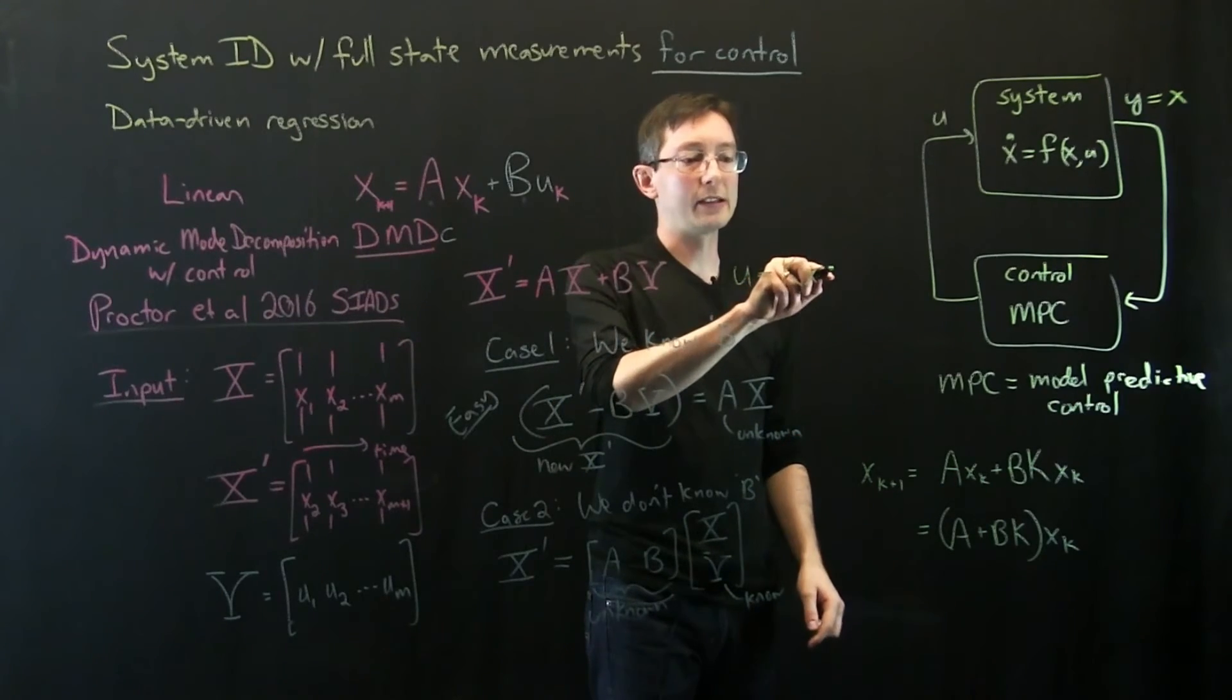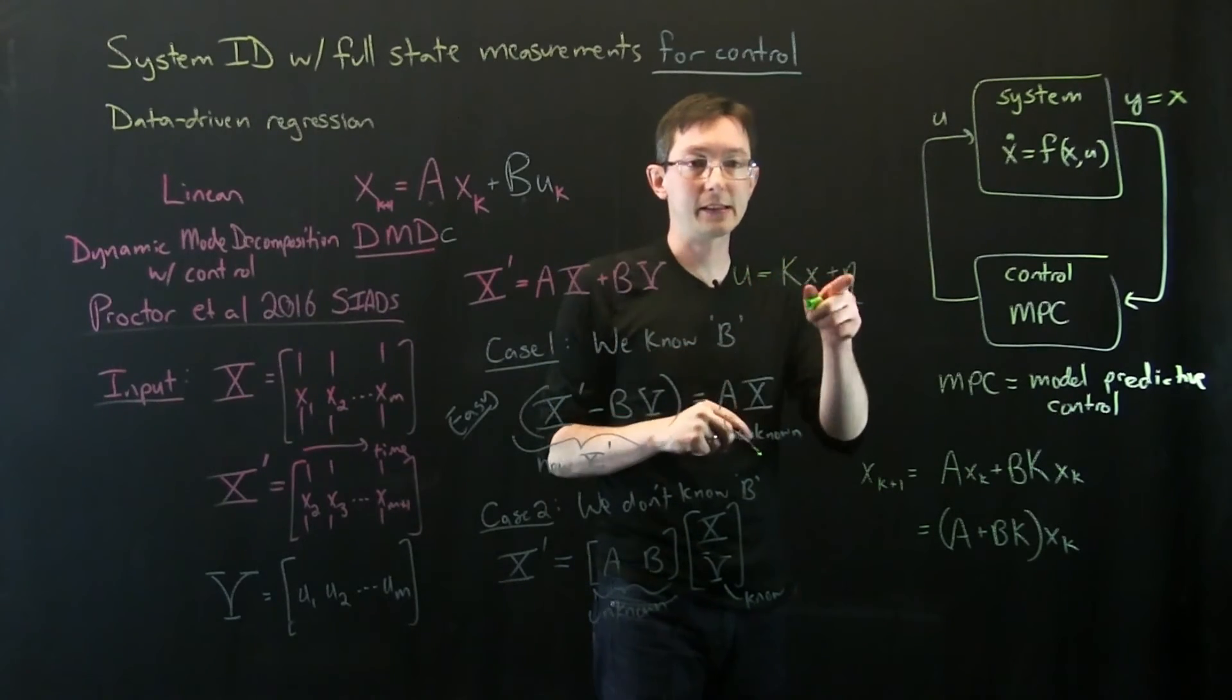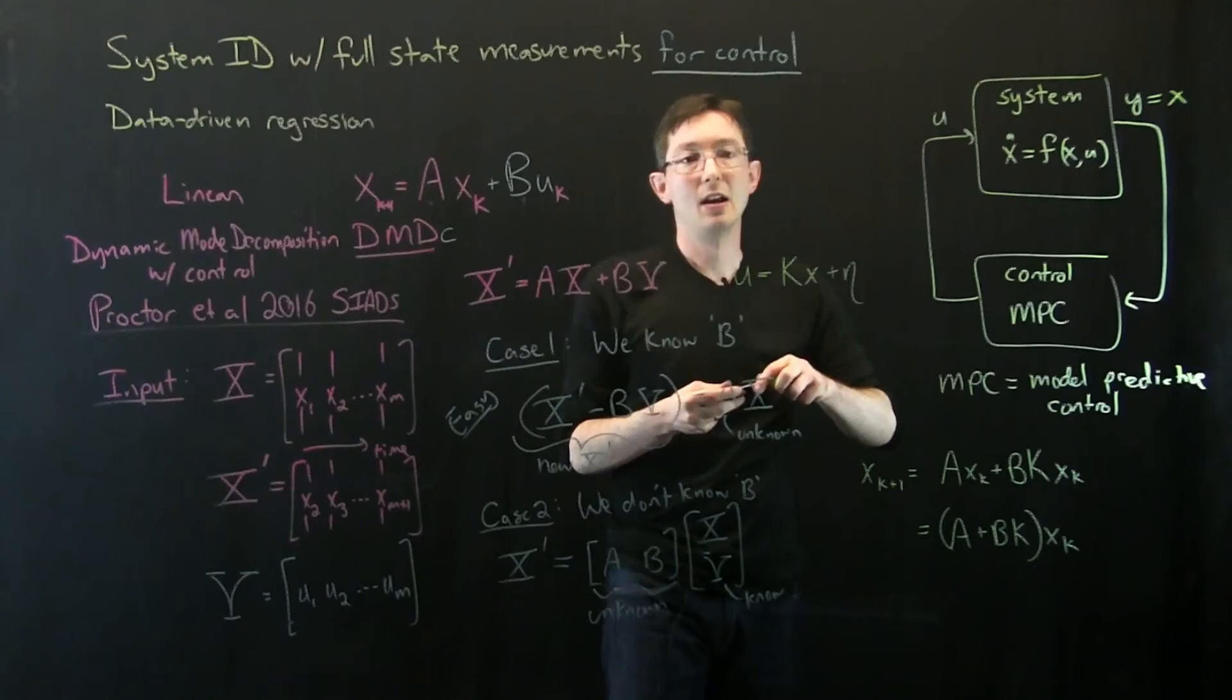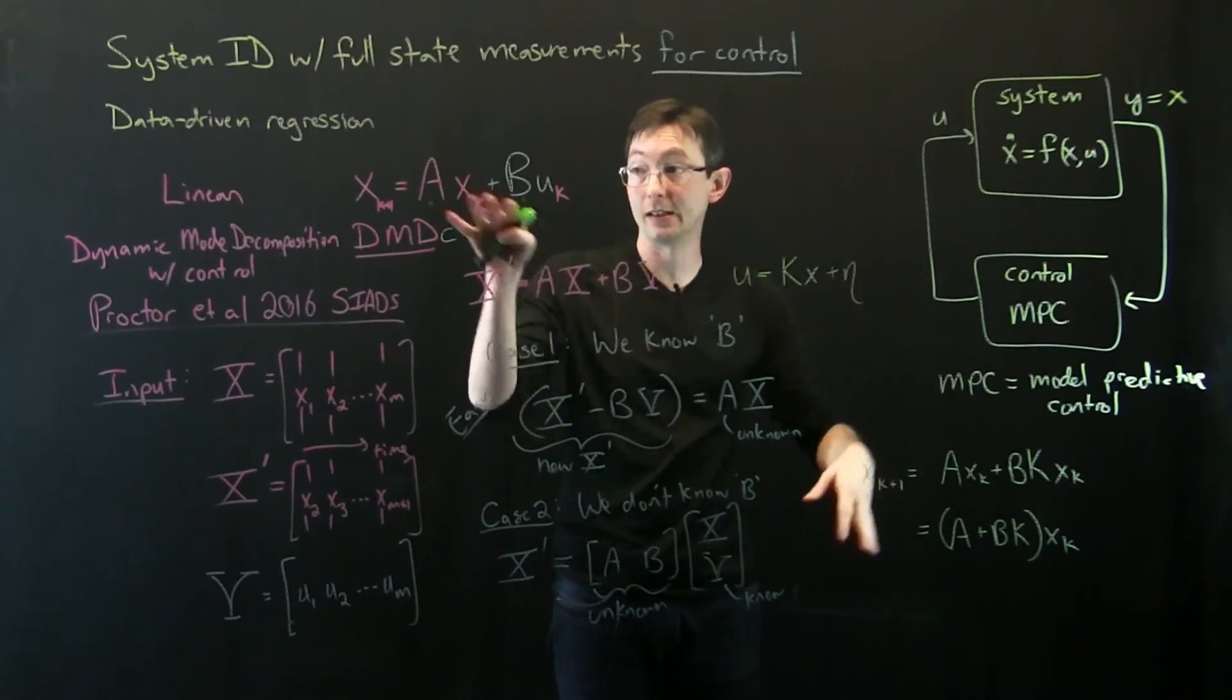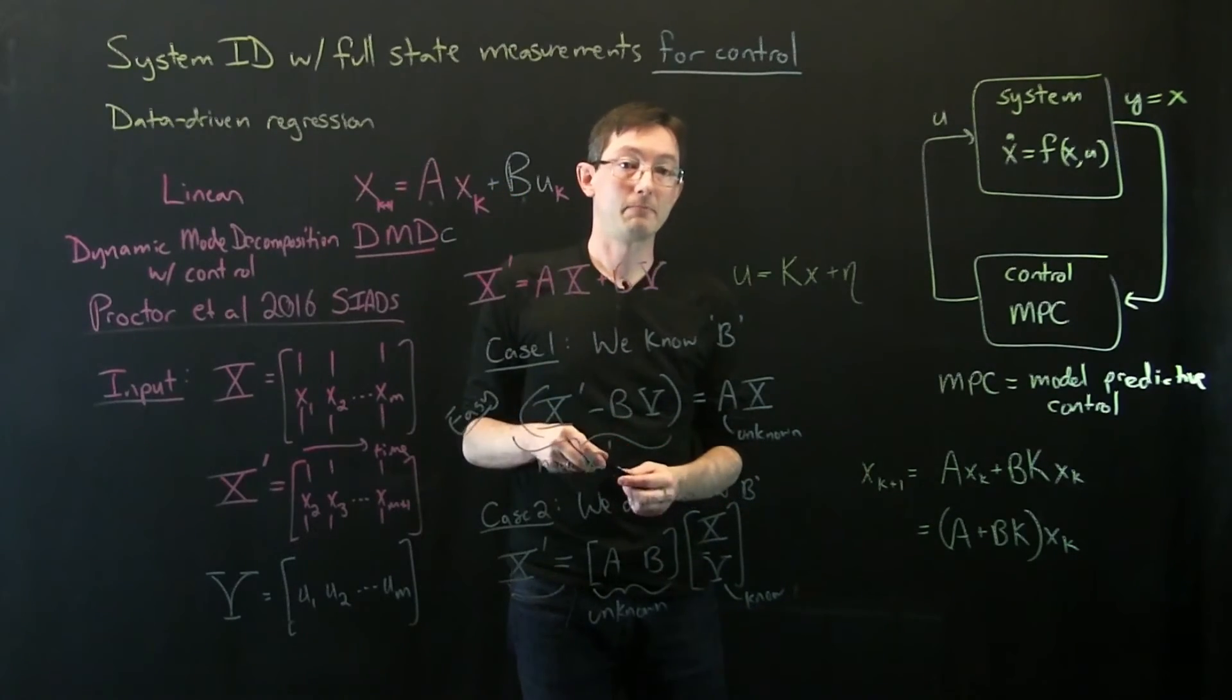So there's a fundamental ambiguity here where if I actually have a system that's being actively controlled, U equals KX, I can't tell the difference between this dynamical system with just an A matrix with no forcing and this dynamical system with an A and a B matrix and this feedback law. So in terms of regression, those are both valid solutions to the data if my system is being controlled. And so often what I have to do is I have to add some kind of a noise signal or some kind of kicks to my system where I actually kick the U occasionally to measure transients in the dynamics.